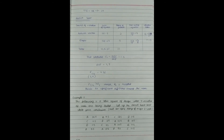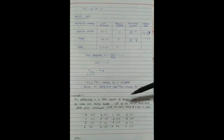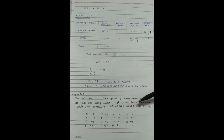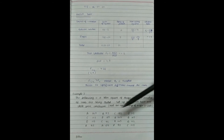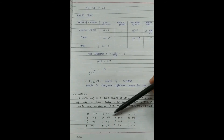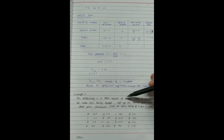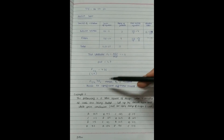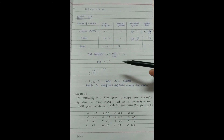Let us solve one more example. The question states that the following is a Latin square design where 4 varieties of seeds (A, B, C, D) are being tested. We are asked to set up the ANOVA table and state our conclusion. A hint is given that we can apply a change of origin and scale. Since it is a Latin square design, we have to perform three-way classification. From the question itself we can determine whether one-way, two-way, or three-way classification is required.